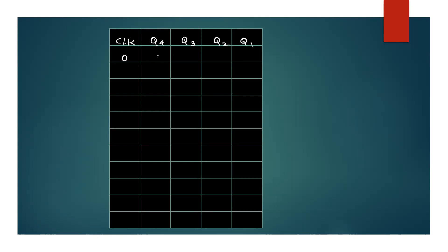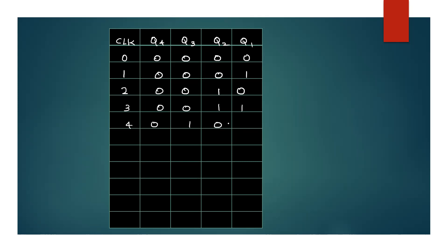At the 0th pulse, Q4 Q3 Q2 Q1 are all 0. Apply the first clock — next state. Apply the second clock — 0011. 3rd clock — 4th clock gives 0100. 5th clock: 0101. 6th clock: 0110.